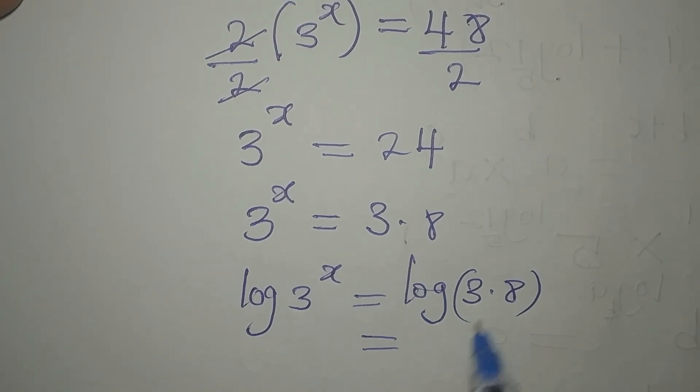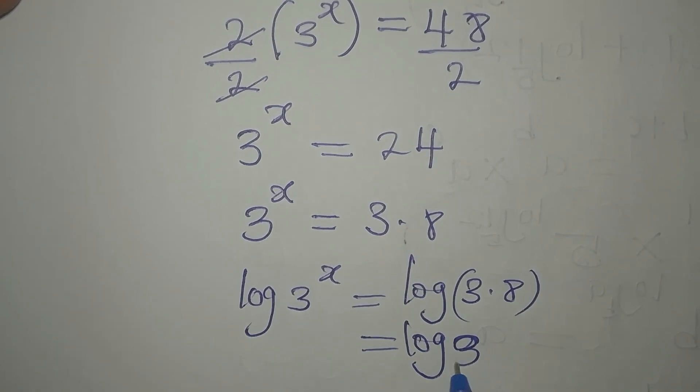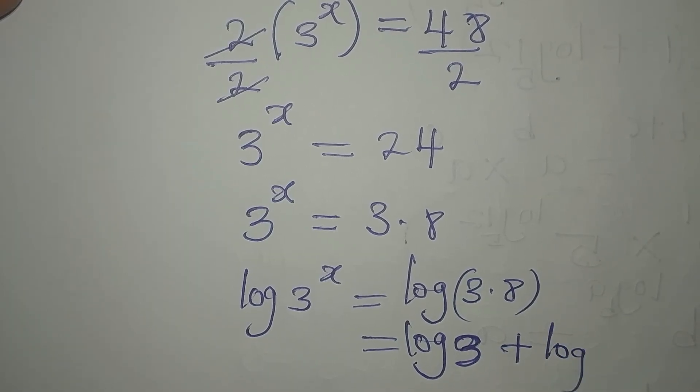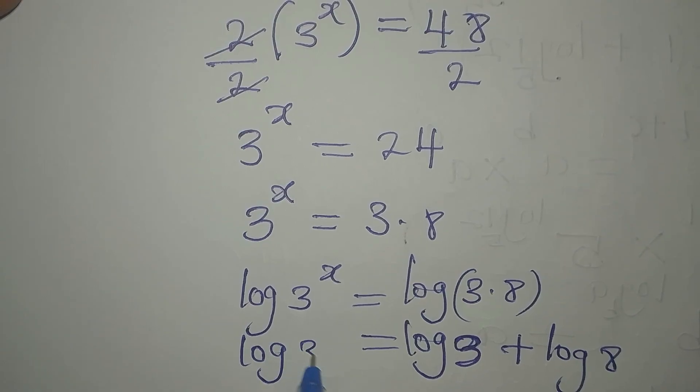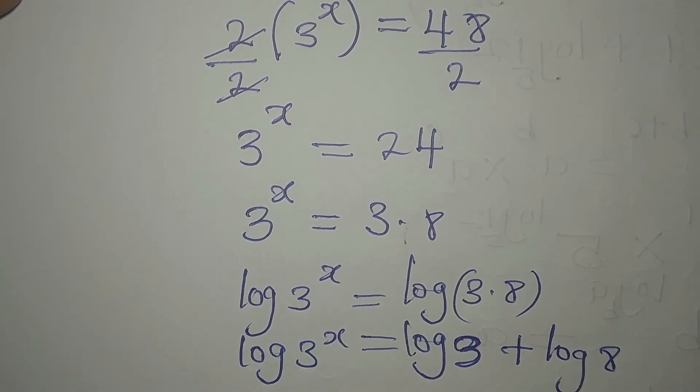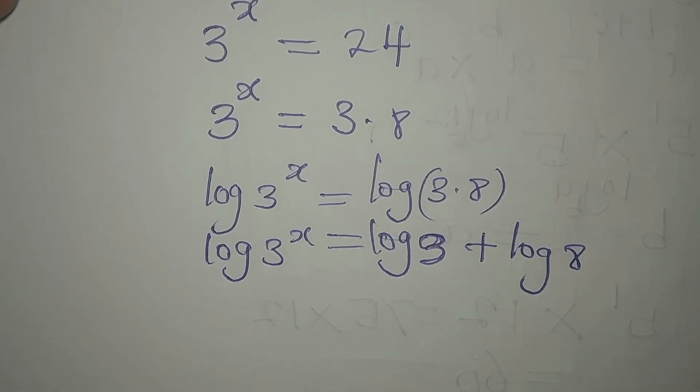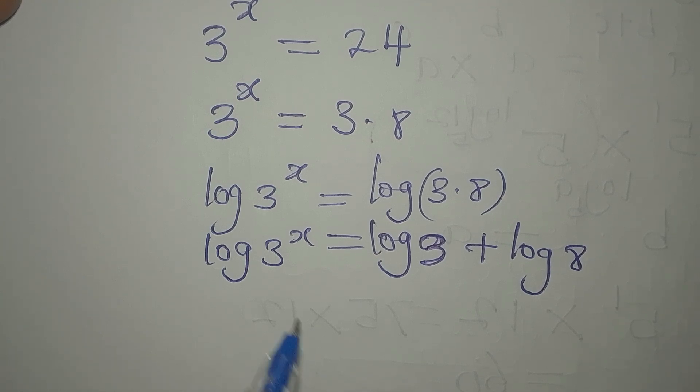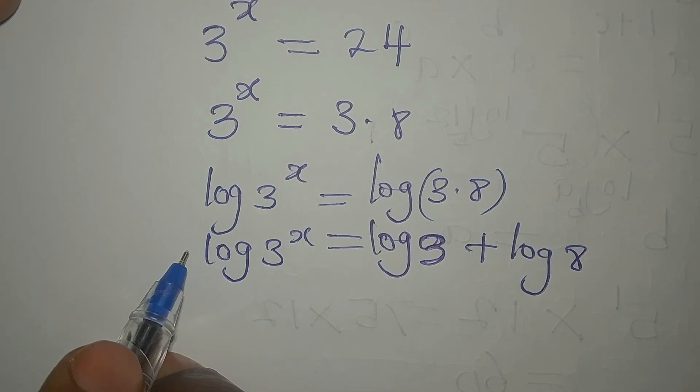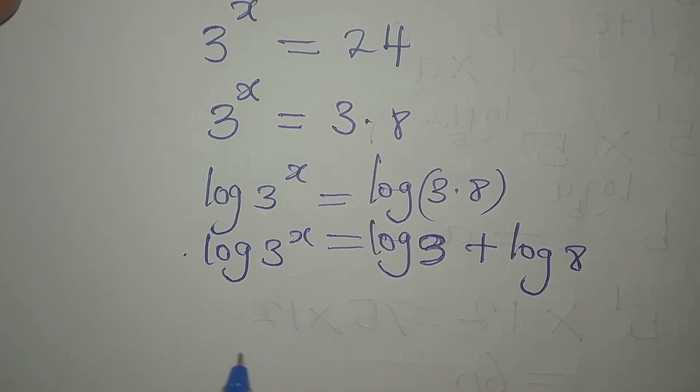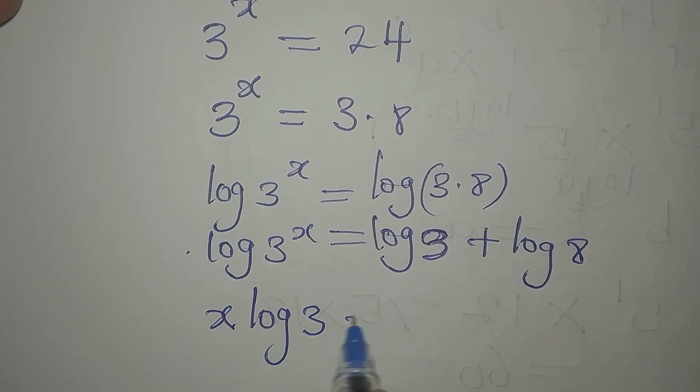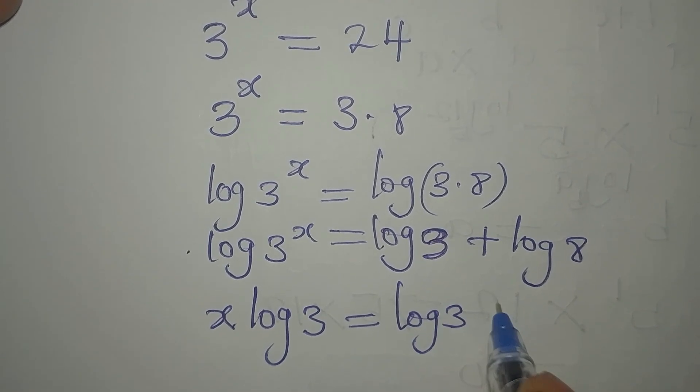Here we'll apply one law that says this is equal to log 3 plus log 8. There's another law that says the power can go behind to multiply the log, so x will multiply log 3 and that will be equal to log 3 plus log of 8.